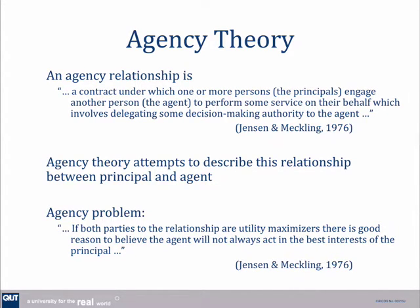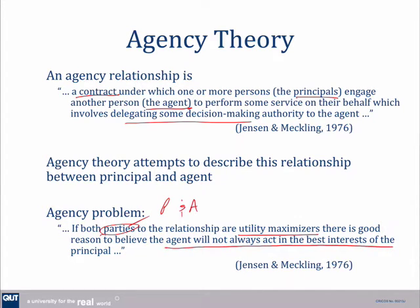Agency theory doesn't just apply to corporate governance — it's any contract where the principals engage someone else, an agent, to perform some service or do something for them, and in doing so they delegate decision-making authority. Agency theory tries to describe this relationship. It assumes that if both parties — the principal and the agent — are utility maximizers, then the agent won't always act in the best interests of the principal. That's the misalignment of interests we were talking about.